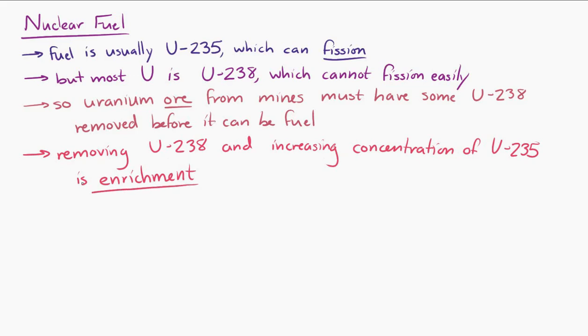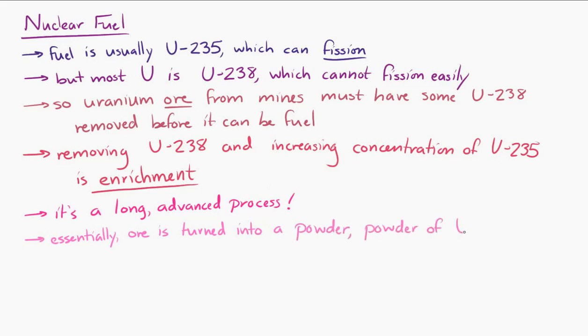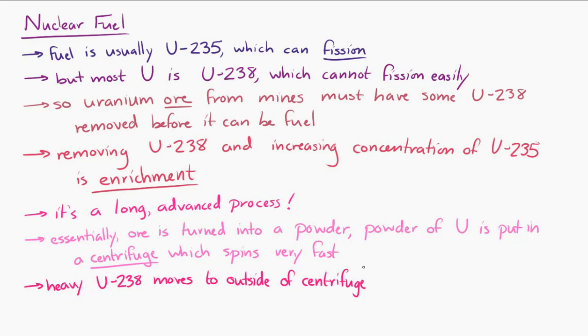Enrichment of uranium is a long process, and it requires pretty advanced chemistry. But the essential idea is that the ore that's dug up has to be turned into a fine powder, and then that powder of uranium is put into a centrifuge, which spins very, very fast. When that happens, the heavier uranium, the uranium-238, moves to the outside. And then that uranium-238 that's on the outside of the centrifuge is then removed. The remaining powder in the centrifuge then is enriched with uranium-235. There's more uranium-235 left in the remaining powder.